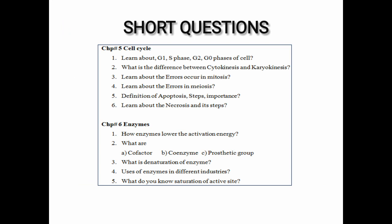Now moving toward the next chapter, chapter number six enzymes. The first question is: How do enzymes lower the activation energy? Students, in this question you have to tell about different methods by which enzymes lower the activation energy, like by distributing charges, by changing shape of substrate, or bringing the substrate in correct orientation.